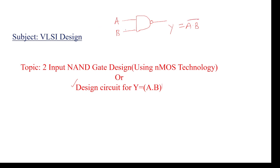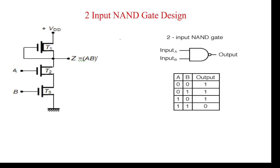This is only the symbol, but there is an internal circuit — I will explain how to draw it and what the rules are. First, the truth table for the NAND gate: 0·0 = 0, complement is 1; 0·1 = 0, complement is 1; 1·0 = 0, complement is 1; 1·1 = 1, complement is 0. This is the truth table and the internal circuit for the two-input NAND gate using NMOS technology.